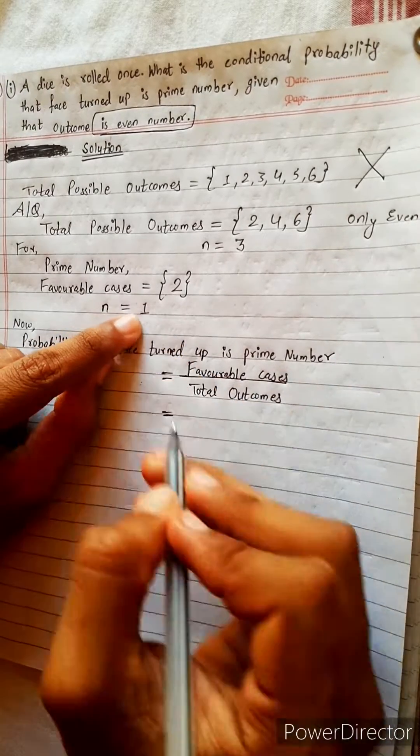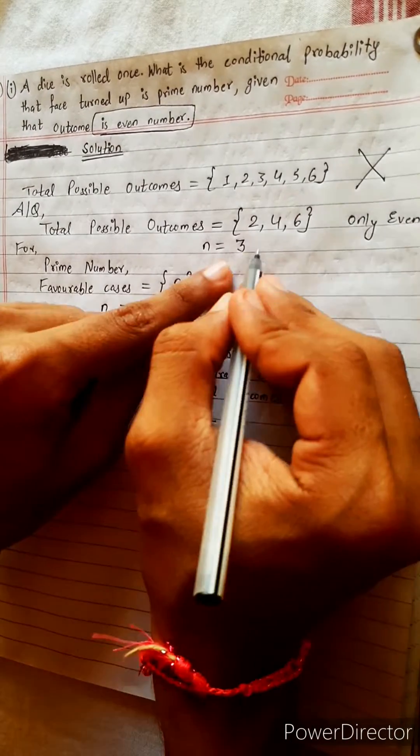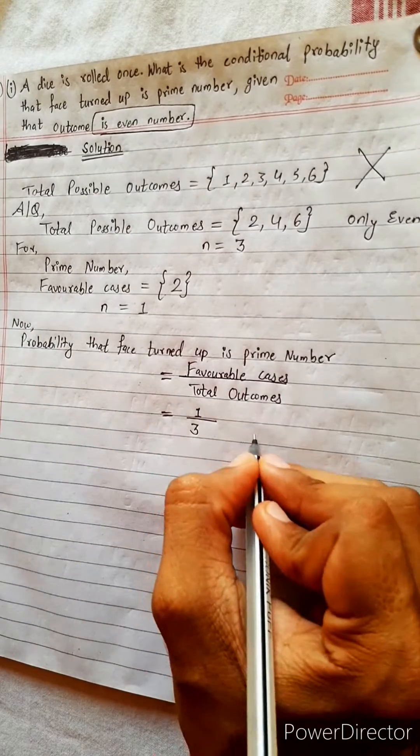Favorable cases, how many favorable cases? Only 1 favorable case. Total outcomes, there are 3 total outcomes. So right here, 3, 1 by 3.